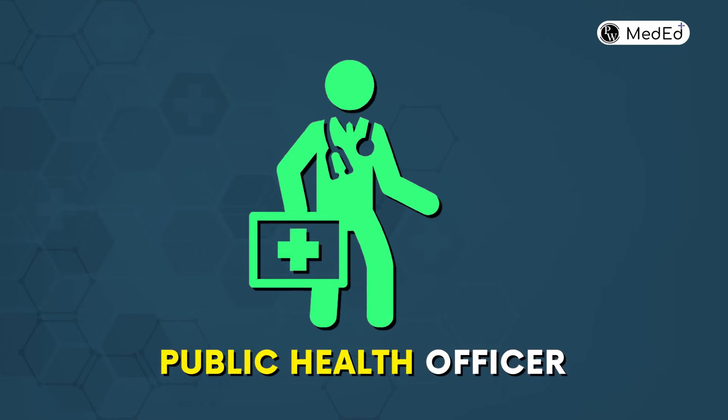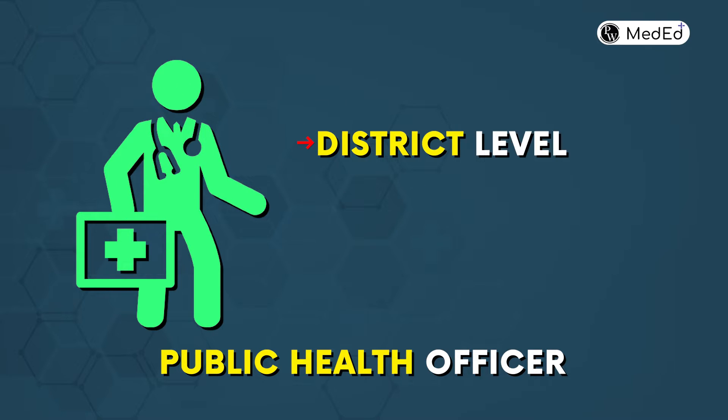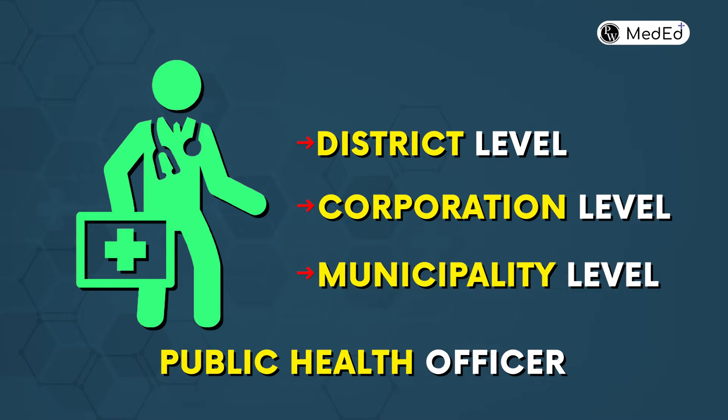The second option is to join as a public health officer at district, corporation, or municipal party level. It is a good government post with good pay. The only drawback is that working hours are not fixed — depending on where you work and government needs, you may have to work prolonged hours.